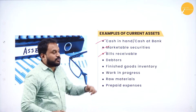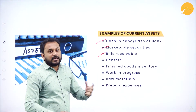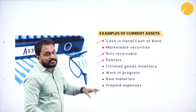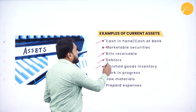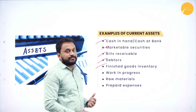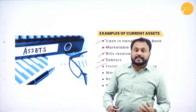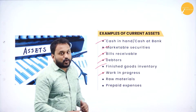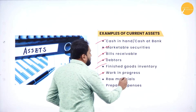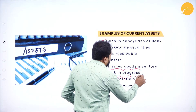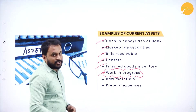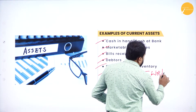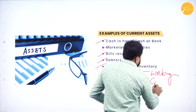Bills receivable — all these things you have already gone through in accountancy in the first PUC. Debtors — again, debtors can also be converted. Next is finished goods inventory. After the finished goods inventory is done, whatever you sell, that is what you get the cash from — so we call that a current asset. Next is work in progress. For work in progress, you really require working capital.